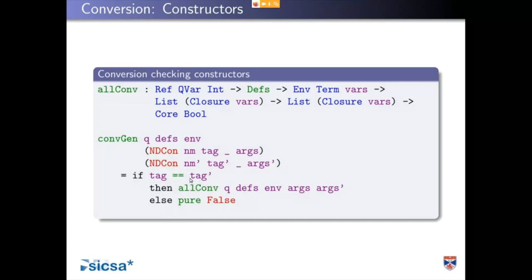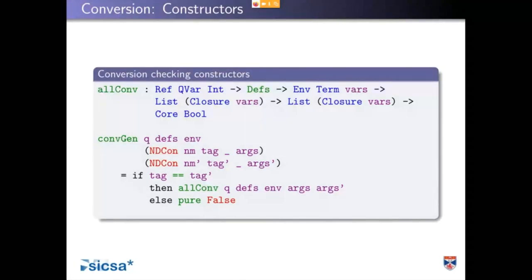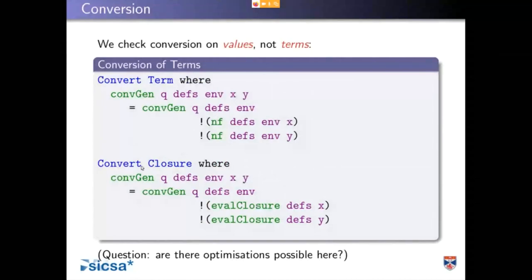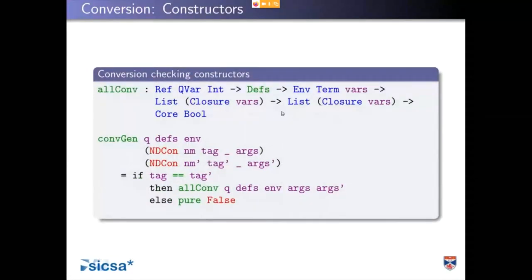There's a small benefit to using values rather than terms: we only evaluate as much as we need to do the check. If checking that the constructors are the same fails, we never bother evaluating the arguments. By contrast, Idris 1 would evaluate to normal form for conversion checking, meaning you might have things that don't convert but would have known very quickly without evaluating if you'd only checked the heads. What all-conv does is go through corresponding pairs in these lists.